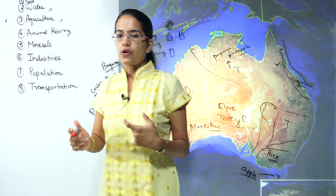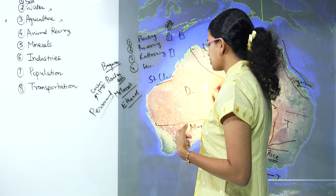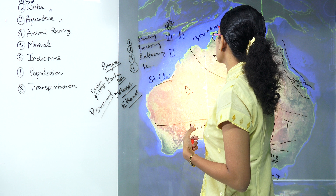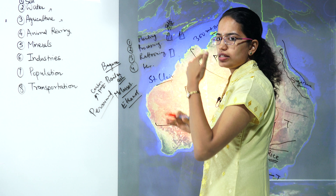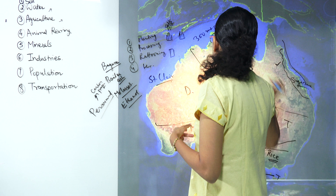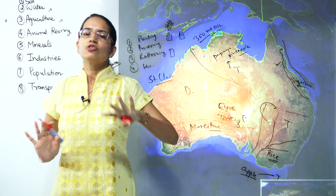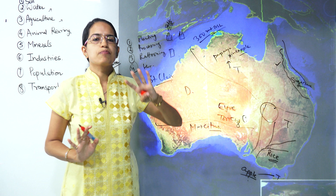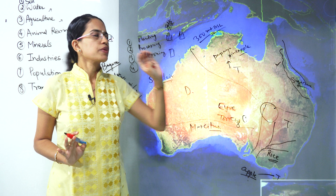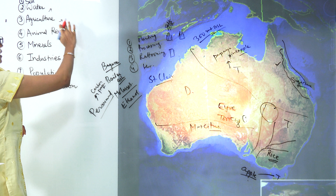Soil we have already talked about. Most of Australia has an elevation of around 300 meters above sea level. The maximum is seen in some mountainous regions, but on an average the elevation is quite low. So we can say Australia on average has predominantly lowland areas. So we have talked about soil, water and agriculture.